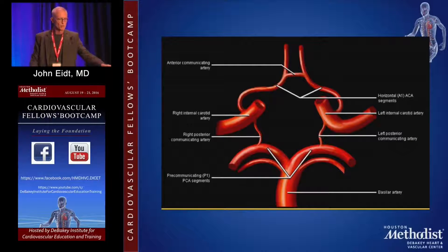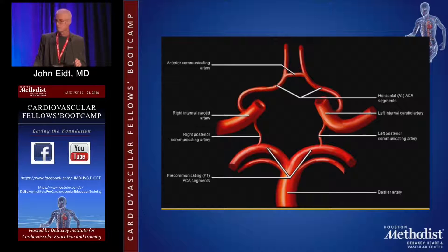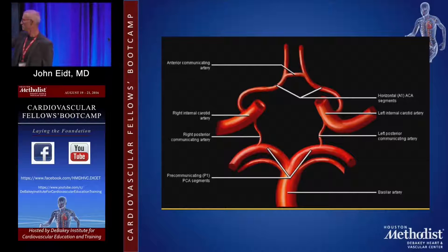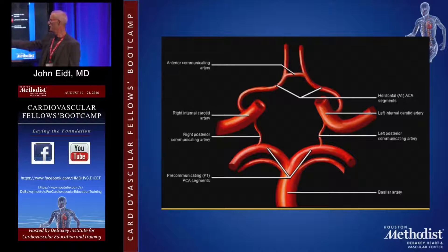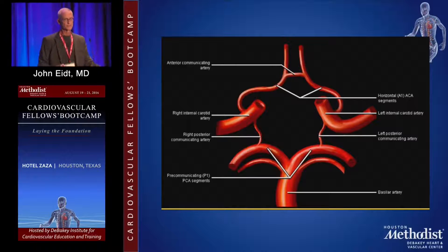Circle of Willis — it's probably worth knowing this. A1 is the anterior cerebral before the ACOM; A2 is after ACOM. P1 is the posterior cerebral before the PCOM; P2 is after PCOM. So if you had an atretic P1 and a big PCOM, that's a typical fetal circulation.